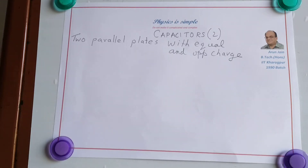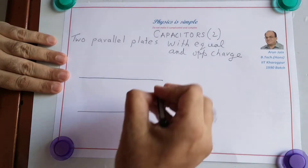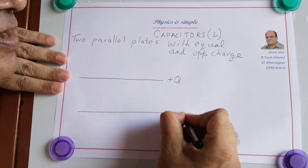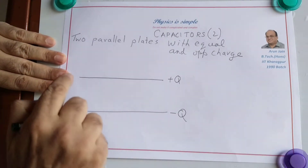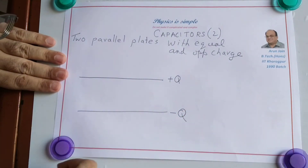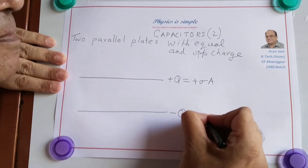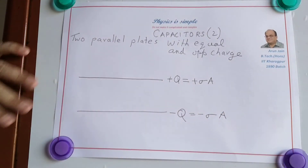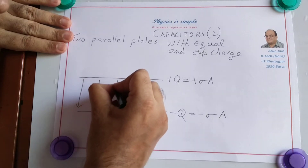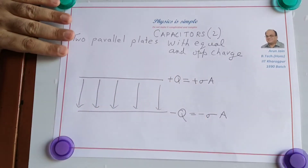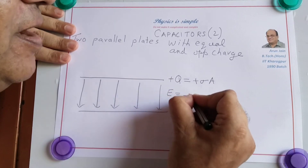Consider two parallel plates with equal and opposite charge. One plate has charge plus Q and the other has charge minus Q. The area of both plates is the same, so the charge per unit area sigma is the same magnitude on both. The electric field is confined to the region between the plates and is given by sigma by epsilon naught.